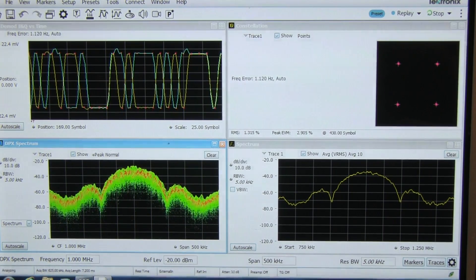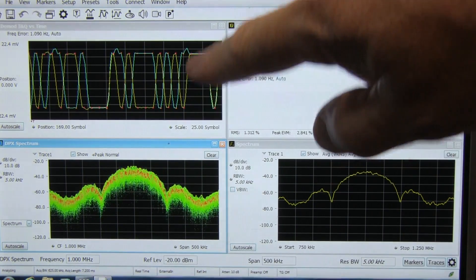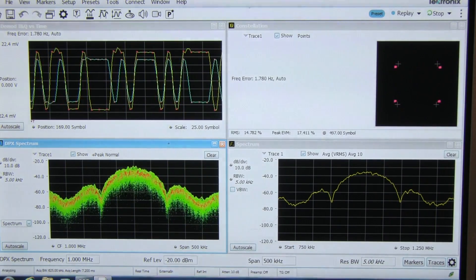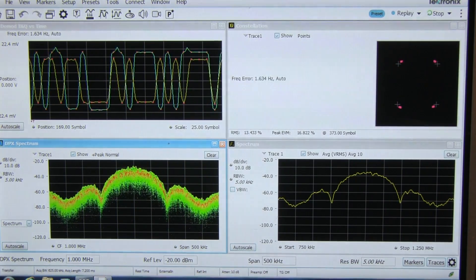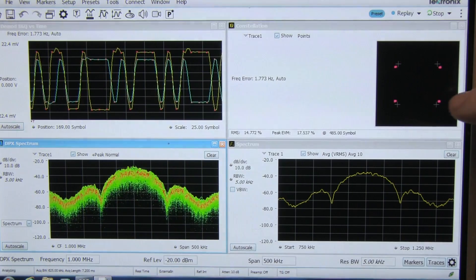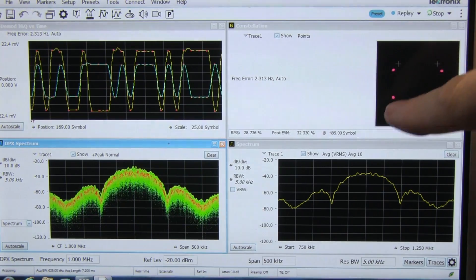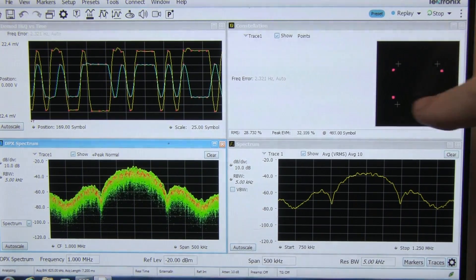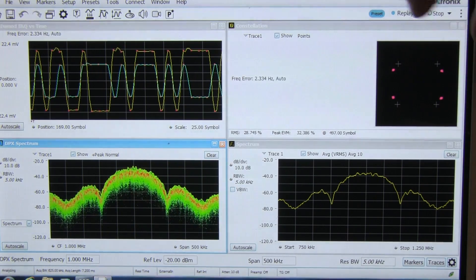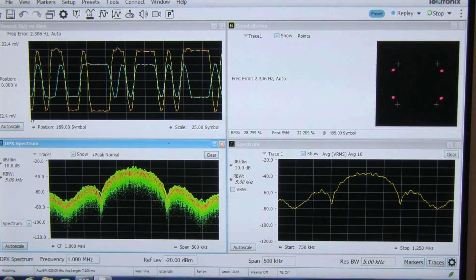The next impairment we will take a look at is IQ gain imbalance, and that is where the I and Q magnitudes aren't the same. So if I introduce a little bit of attenuation into one of the I and Q waveforms, you can actually see a different amplitude here now, and we can see what it does to the constellation. It actually squishes it in one direction or the other. So instead of being lined up perfectly at our four equidistant constellation points, we have less gain in one direction compared to the other. And again, that is IQ gain imbalance.